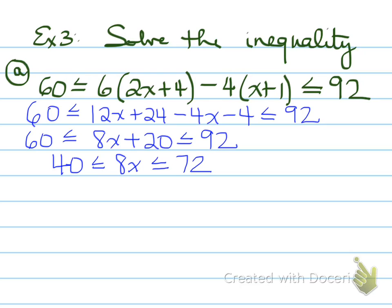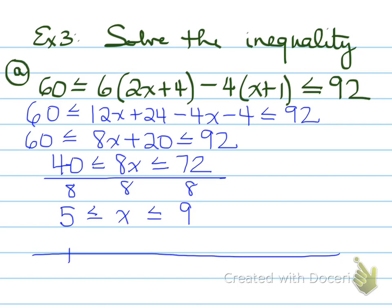So this is saying 8x is between 40 and 72. We don't want 8x folks, we want x. So what do we have to do? That's right, divide everything by 8. So the values are going to be x is between 5 and 9.